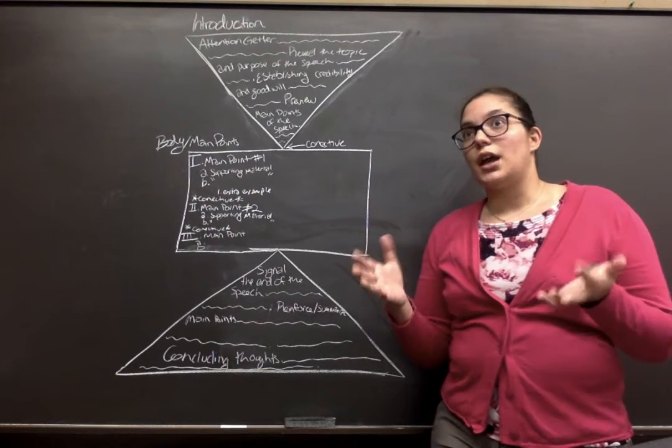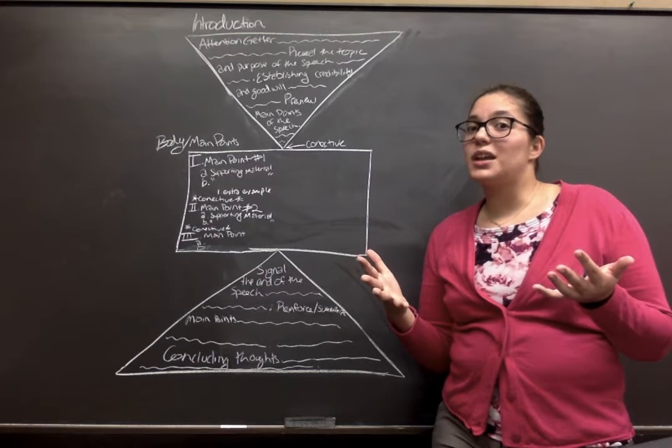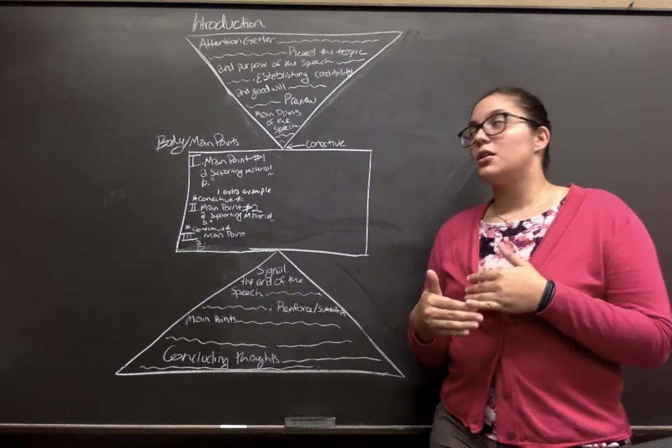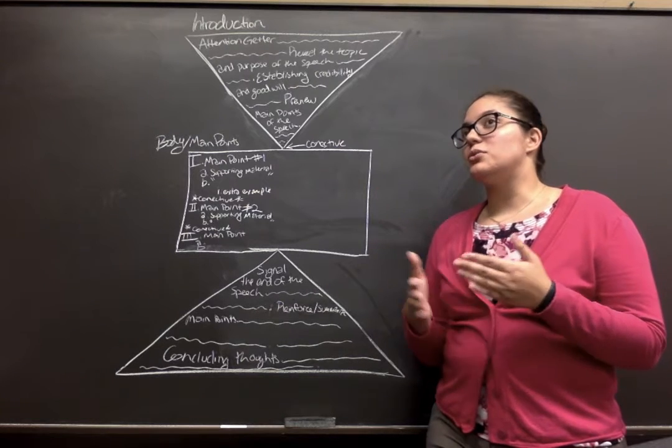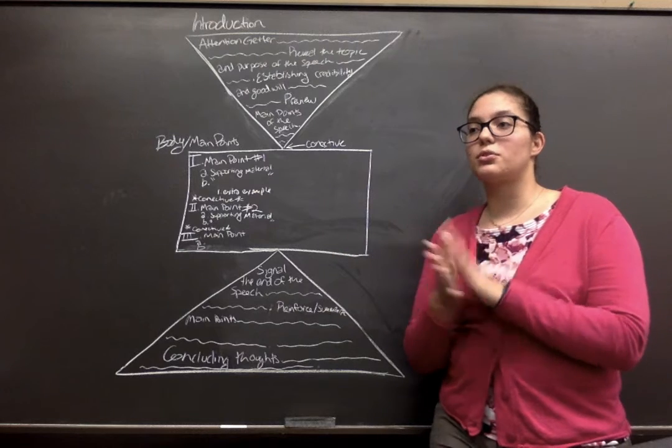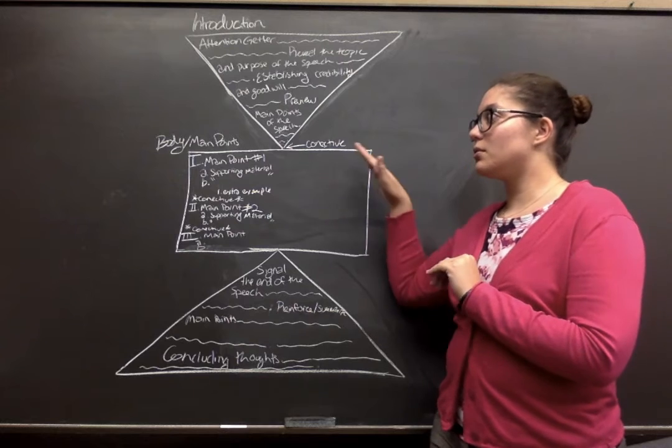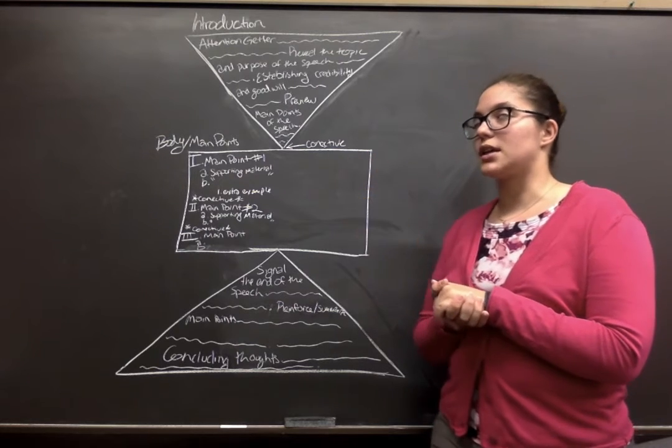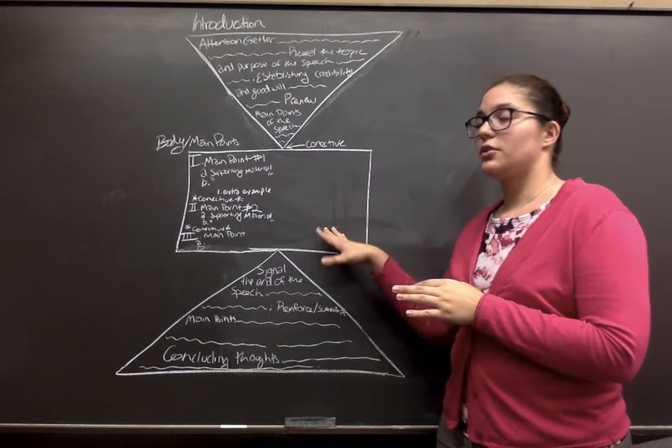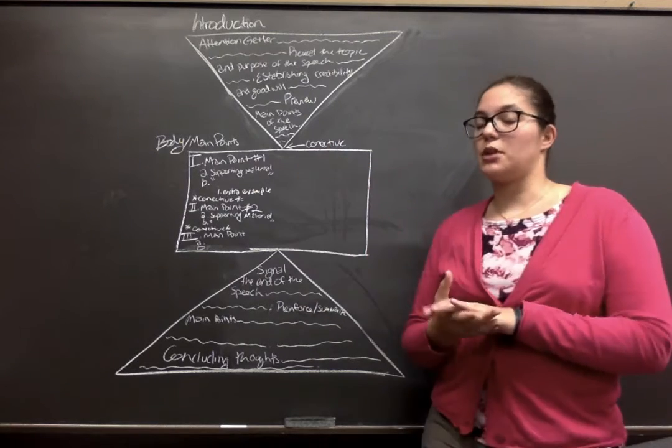You can go anywhere to five main body points. I don't suggest it because the more body and main points you use the more confusing the speech can be. So I would stick to two to three really thought out and packed, well thought out and processed main points. Here I've got three as an example. So main point one then you have your supporting material.